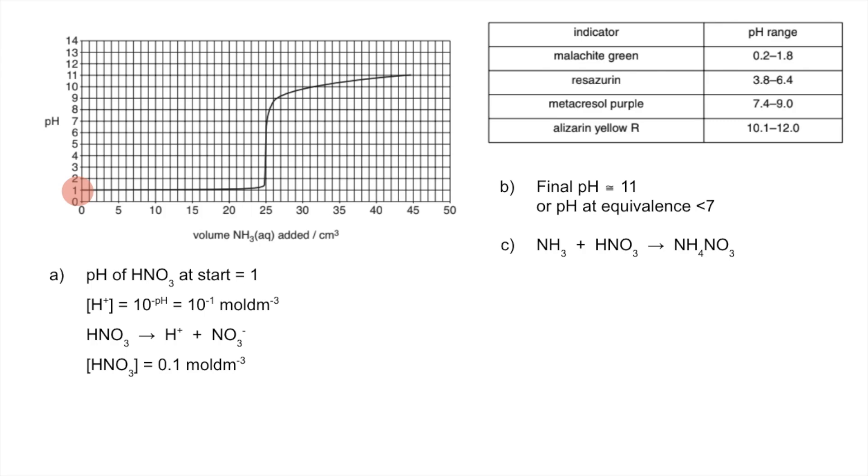Part D, a suitable indicator for the titration. Basically we're looking for an indicator whose pH range lies in the vertical section and there's only one from the list. It is the resuzurin with a 3.8 to 6.4 pH range.